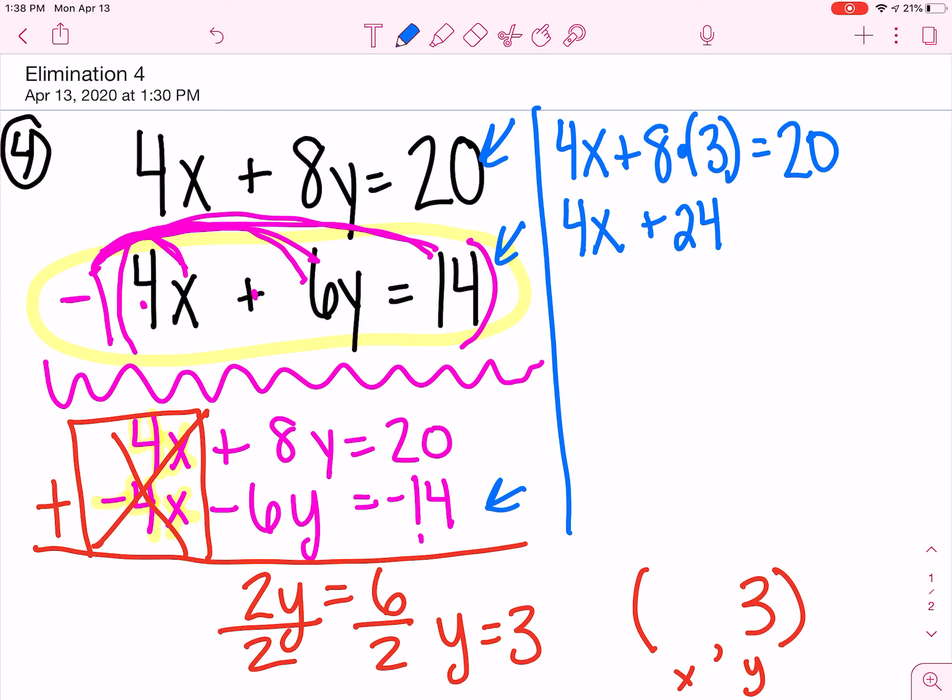I have 4x. 8 times 3 is 24 equals 20. I'm going to have minus 24 from both sides. I have 4x left there. Then, I have minus 4. Divide both sides by 4. x by itself is negative 1.